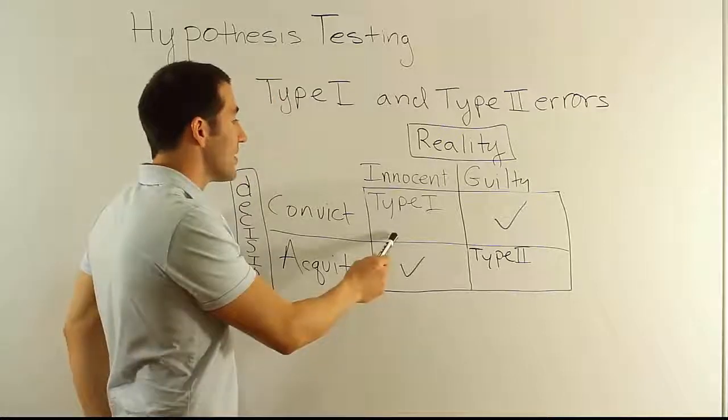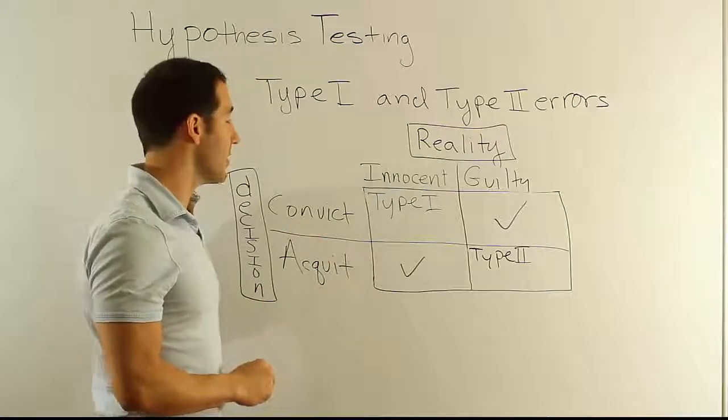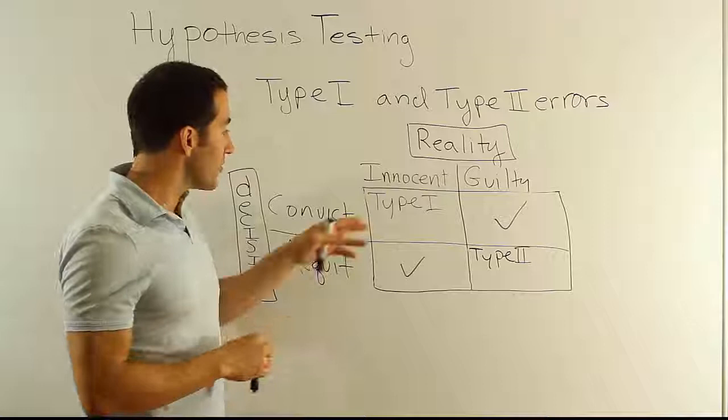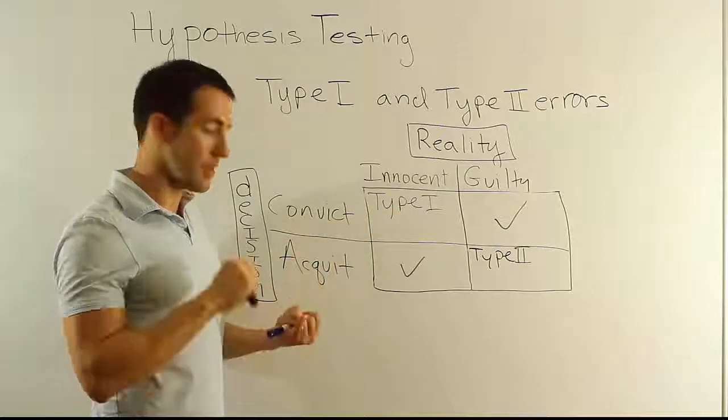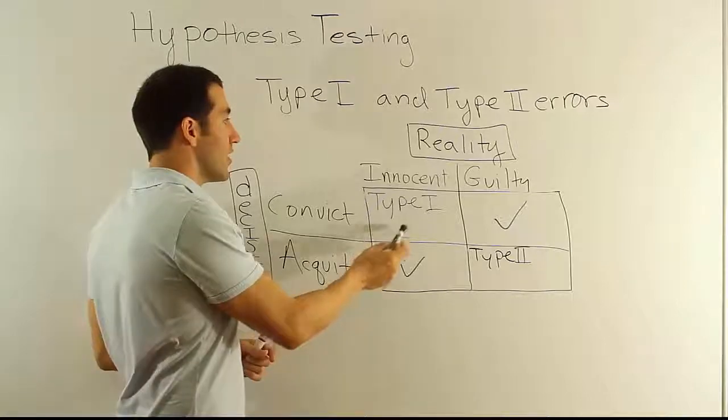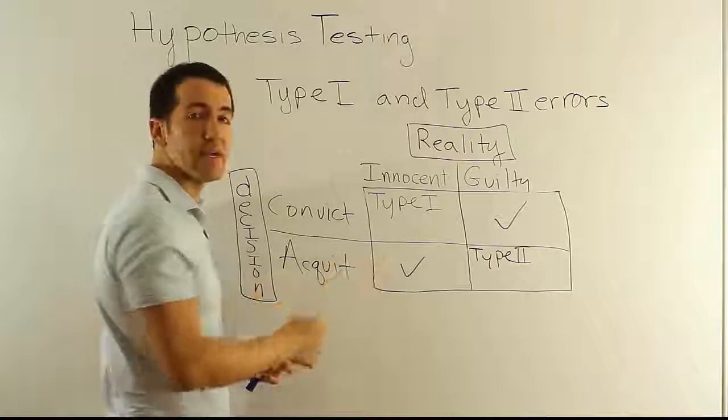Now let's think about it. We said that we're going to assume that our Type I error is the worst case scenario. Does that fit this model? I think it does, because in the United States in our criminal system we've tried to prevent this from happening the most. That's why we have things like the Bill of Rights in place to protect people's rights. Why? Because we want to avoid this scenario where an innocent person is convicted. We don't want to put an innocent person in jail.